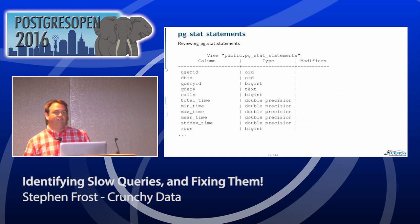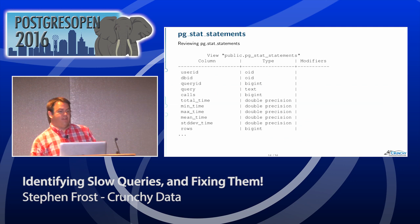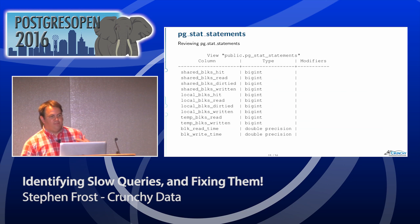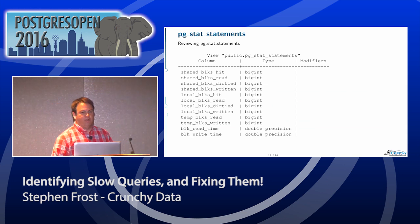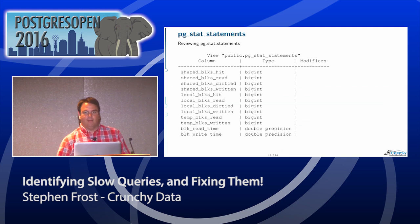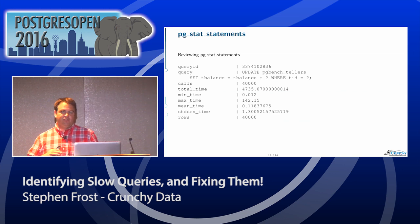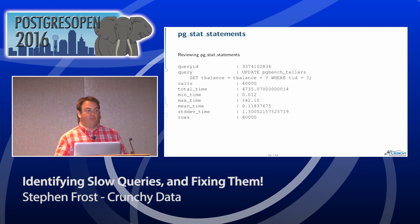The information you get out of this has a lot of similar information to pgBadger, but it's more current because it hasn't had to be written out to a log file and then run through the log analyzer. You get calls, total time, min, max, mean time, standard deviation, number of rows returned, shared block hits, shared blocks read, how many blocks were dirtied or written — all really useful information available through this pg_stat_statements view.